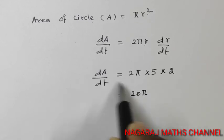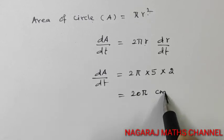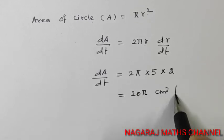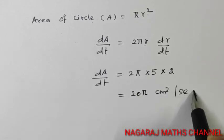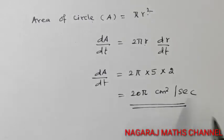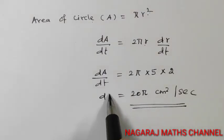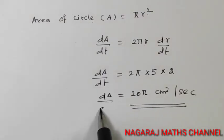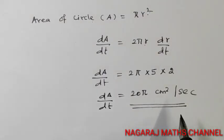dA by dt is equal to 20 pi cm squared per second. This is the answer. Thank you.